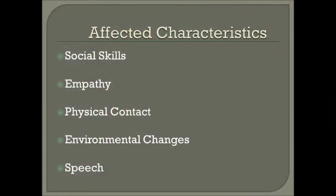The characteristics that are affected by autism are social skills, empathy, physical contact, environmental changes, and speech. Generally, an autistic person does not like to be placed in a crowded area, and if done so, will remove themselves. Cognitive abilities are high, yet it's relaying the information that presents the most difficulty.